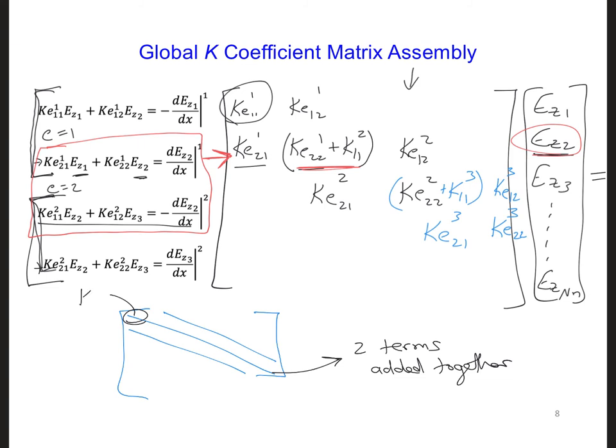You can see here, we didn't have two equations to add together here. So here we're going to have just one Ke 1,1,1. And at the very last one, we're also not going to have two equations to add together because there's just one element with one node at the end.